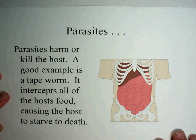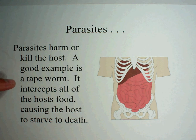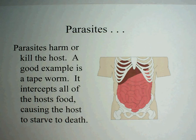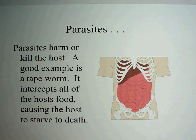The third example of symbiosis is parasitism. In parasitism, one thing lives off another — parasites harm or kill the host. A good example is a tapeworm: it intercepts all of the host's food, causing the host to eventually starve to death. A tapeworm is an example of a parasite that lives inside of humans. If we went to certain parts of the world and weren't careful with what we eat and drink, we could get the eggs of a tapeworm and they will actually grow inside your intestines, stealing nutrients from the food you eat so you would slowly starve.